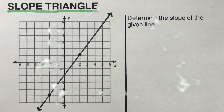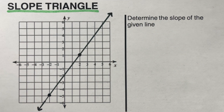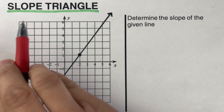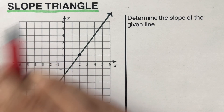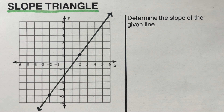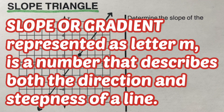Hello everyone! In this video, we're going to determine the slope of a line using a slope triangle. By definition, slope or gradient of a line, usually represented as the letter M, is a number that describes both the direction and the steepness of the line.